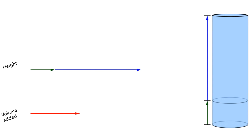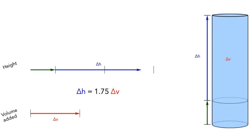Next, I'll add black bars to indicate the change in volume. The distance between the bars shows the amount of change in volume. We can copy this length onto the height bar. If we think about the amount of change in height, we can see that delta H is roughly 1.75 times as large as delta V.